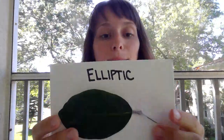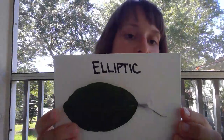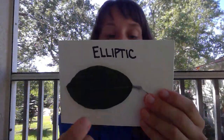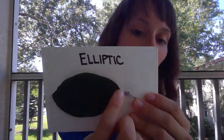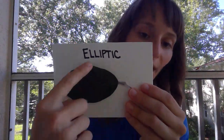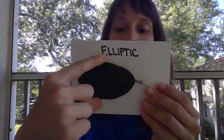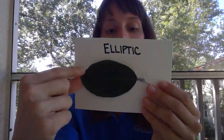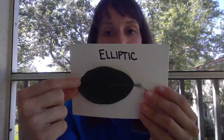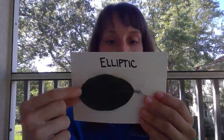Now our last two are pretty easy to confuse, so I will do a compare and contrast at the end when I finish going over each of them. Here you have an elliptic leaf. An elliptic leaf has a narrow base, it is wider at the middle, and then it has a slight point to its tip at the end.